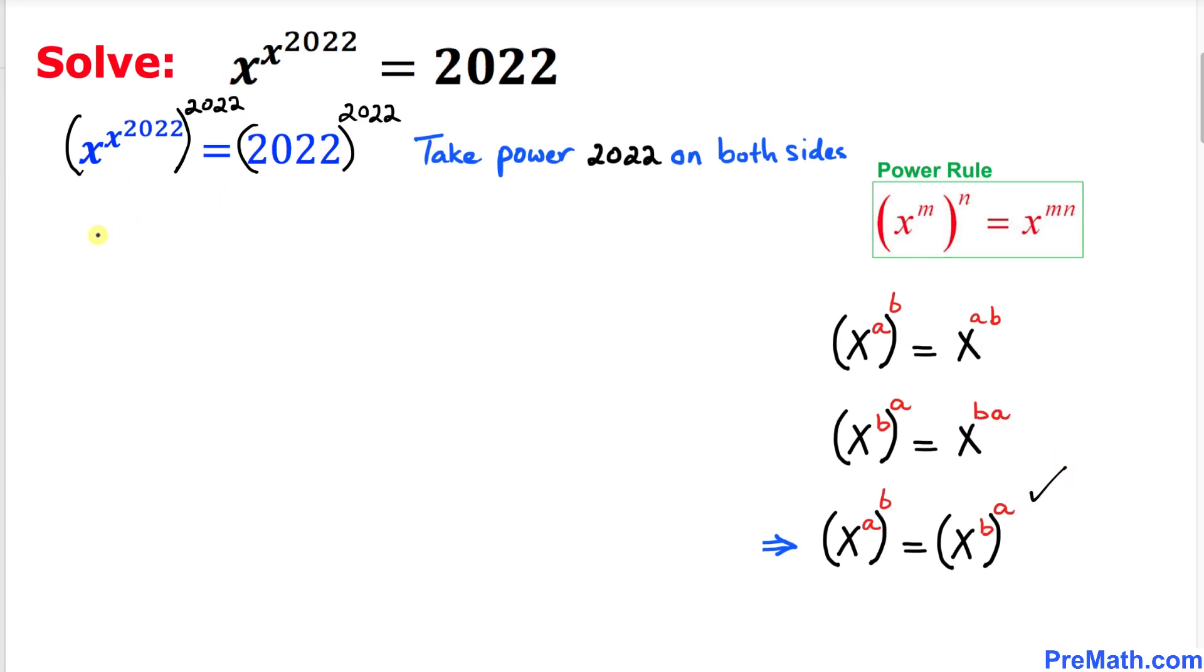I can write this one as x power 2022 and then whole power x power 2022 equals 2022 power 2022.